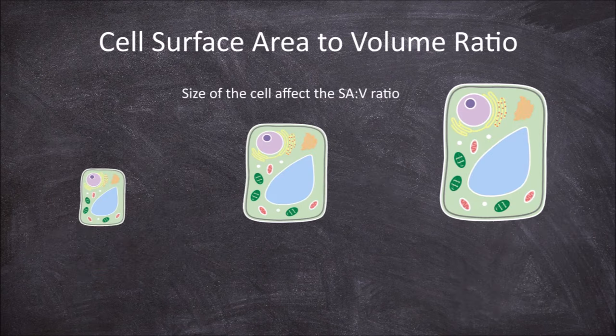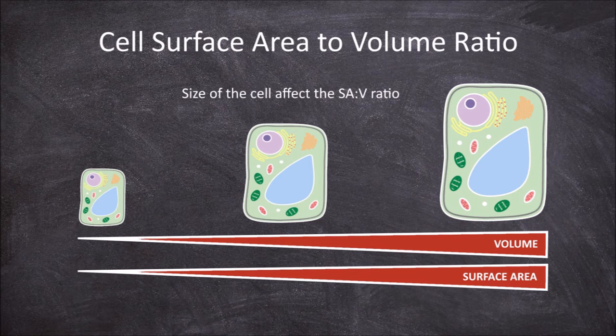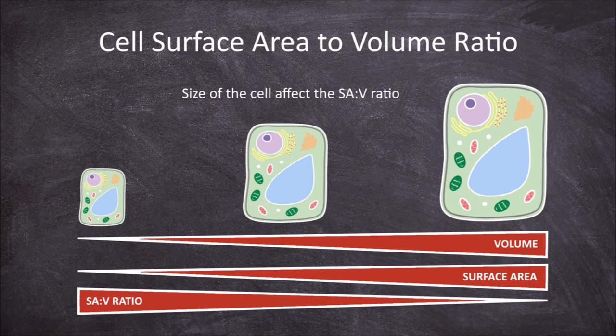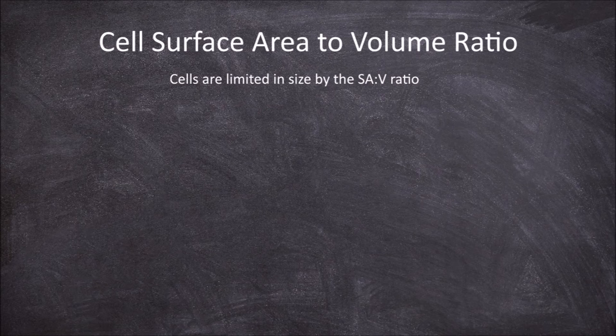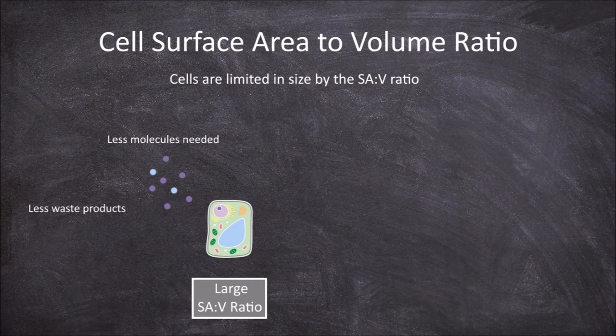The size of the cell affects the surface area to volume ratio. As the cell gets bigger, the volume increases inside and the surface area also gets bigger, but the surface area to volume ratio gets smaller. When the cell is small it has a larger surface area to volume ratio — it has a smaller volume so needs fewer molecules transported through the membrane for metabolic processes, and there is less waste to be removed. At the same time there is more cell membrane relative to volume for this movement to occur.